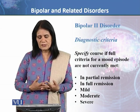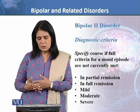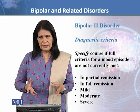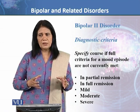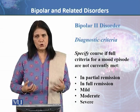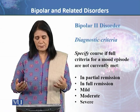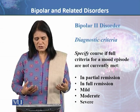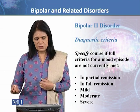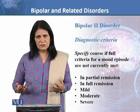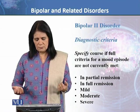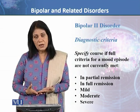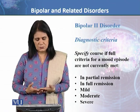You also have to specify the course if the full criteria for a mood episode are not currently met. You need to indicate whether the patient is in partial remission — for example, the patient had been meeting Bipolar 2 criteria but now some features have ended or gone into remission — or in full remission, meaning the patient is fully recovered. You also specify severity: mild, moderate, or severe.